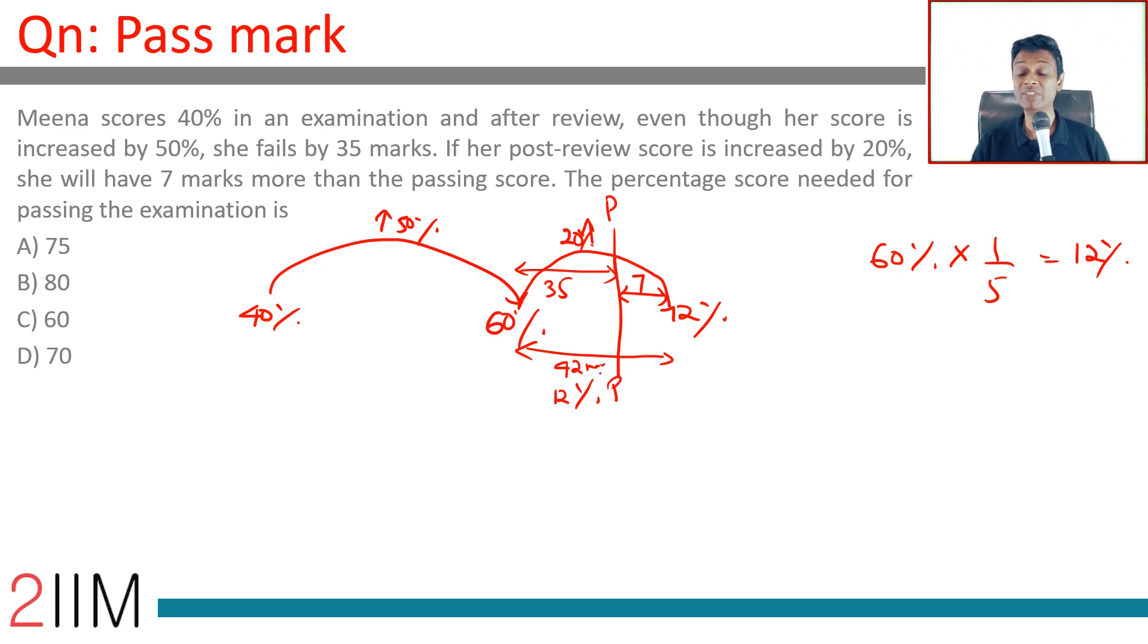With this we can find how much each percentage stands for. We know that this ratio is 5 is to 1. So 60 percent to 72 percent, the difference of 12 percent can be broken as 10 percent and 2 percent. I just need the ratio.